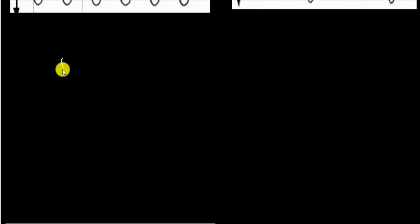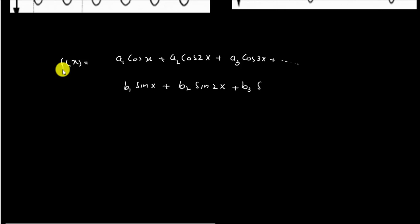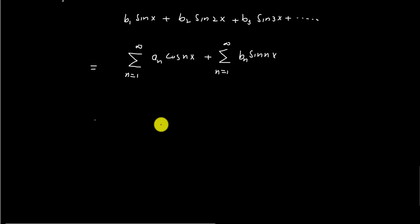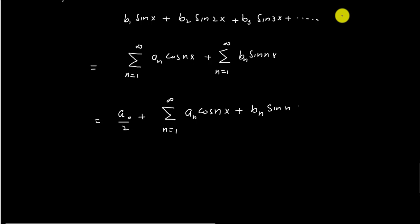We can represent the resultant wave by mathematical equations which contain a large number of sine and cosine terms. For example, f(x) = a1·cos(x) + a2·cos(2x) + a3·cos(3x) + ... and similarly b1·sin(x) + b2·sin(2x) + b3·sin(3x) + ... This can be written in summation form as: summation from n=1 to infinity of an·cos(nx) plus summation from n=1 to infinity of bn·sin(nx).